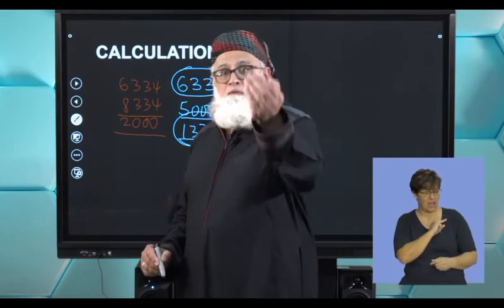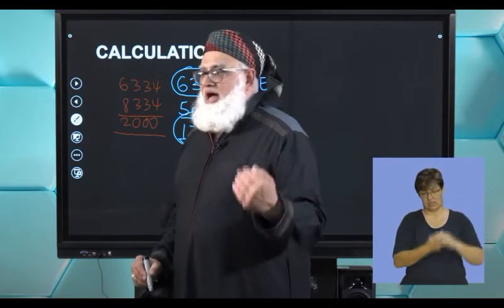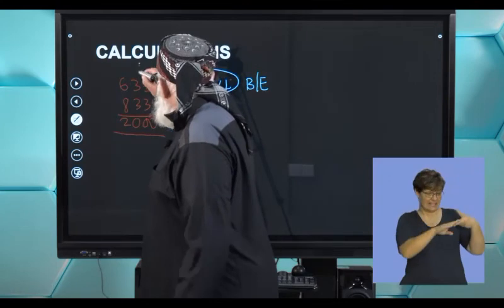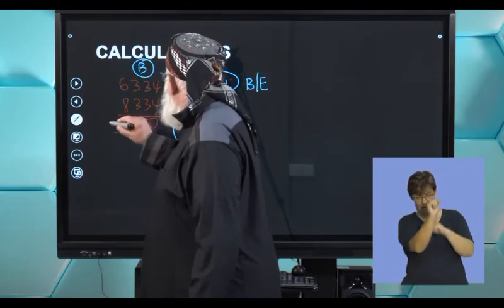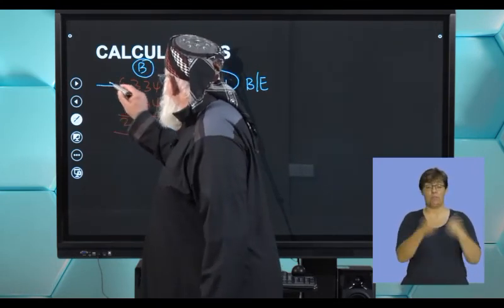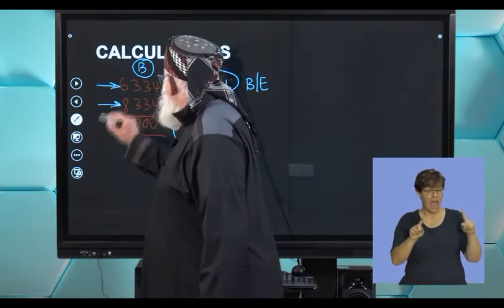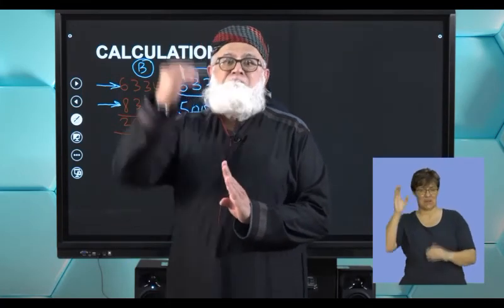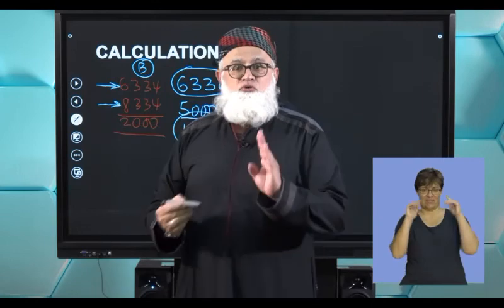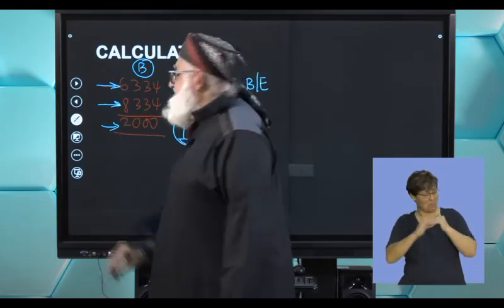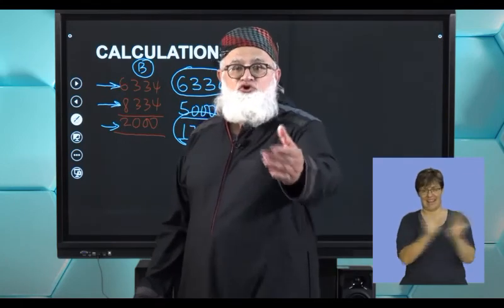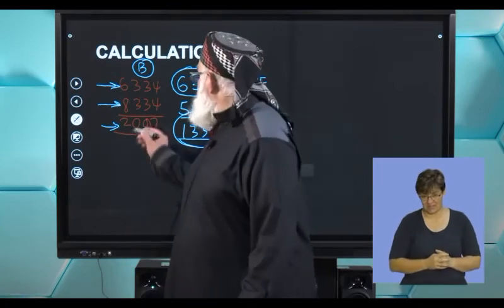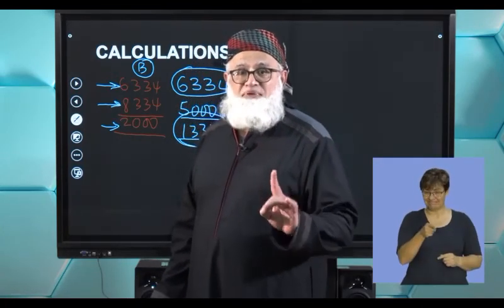Going back to our examples: we manufactured 5,000 and break even was 6,334 — we were under the break even point by 1,334 units, clearly making a loss. In the second scenario, the break even point is 6,334 but we manufactured 8,334 — manufacturing 2,000 units above the break even point, clearly making a profit on those 2,000 units.